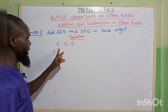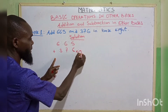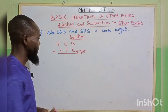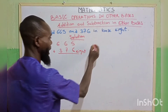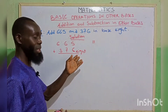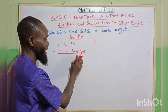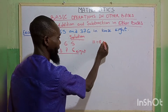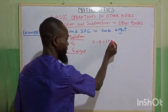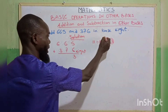So we have 665 plus 673, all in base 8. We use normal addition. 5 plus 6 gives 11. Anytime the number is greater than the base, we ask how many times the base goes into the number — that is, how many 8s are in 11. 11 divided by 8: 8 goes into 11 once, remainder 3. So we write our remainder 3 and carry the 1.